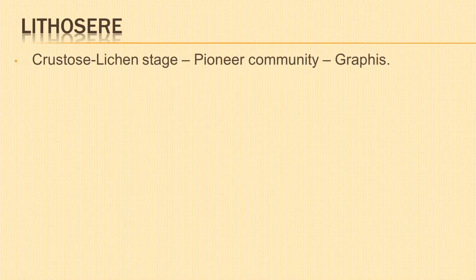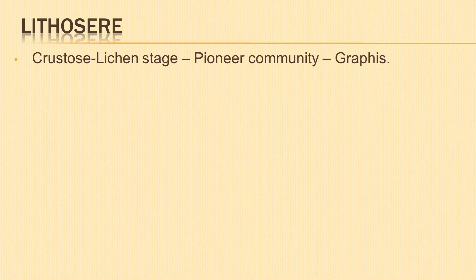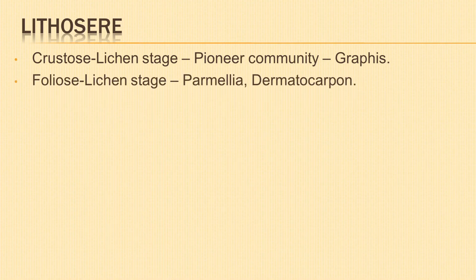Let us now look at lithosere. It is a type of xerosere and involves ecological succession on a bare rock surface. The first stage is the crustose lichen stage, which forms the pioneer community — examples include Graphis and Rhizocarpon. Lichens are resistant to desiccation and temperature extremes. They produce organic acids that cause weathering of rocks, releasing minerals essential for the growth of lichens. This favours the arrival of foliose lichens.